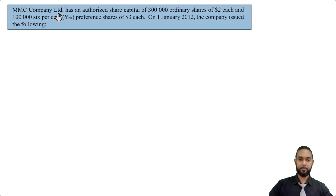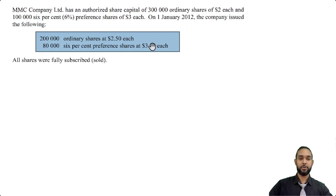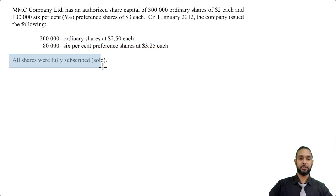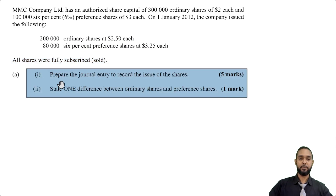With that said, let's get into the question. MMC Company Limited has an authorized share capital of 300,000 ordinary shares of $2 each and 100,000 6% preference shares of $3 each. On the 1st of January 2012, the company issued 200,000 ordinary shares at $2.50 each and 80,000 6% preference shares at $3.25 each. All shares were fully subscribed. The requirement is to prepare the journal entry to record the issue of the shares and state one difference between ordinary shares and preference shares.